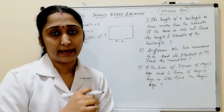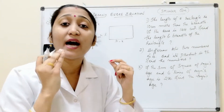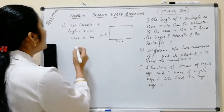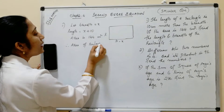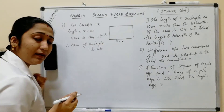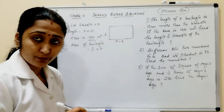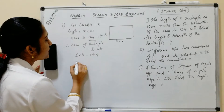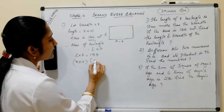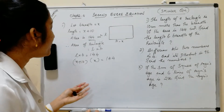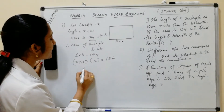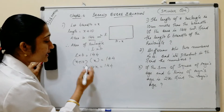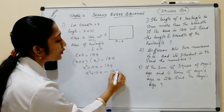The formula for the area of a rectangle is length × breadth. So area = length × breadth = 144. That means (x + 10) × x = 144. Expanding the bracket: x² + 10x = 144. Moving 144 to the left side: x² + 10x − 144 = 0.